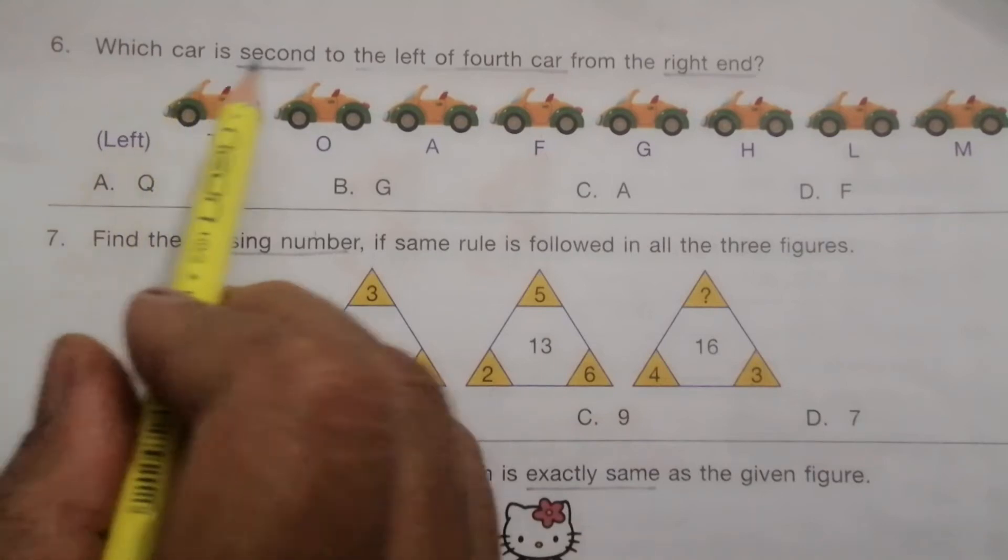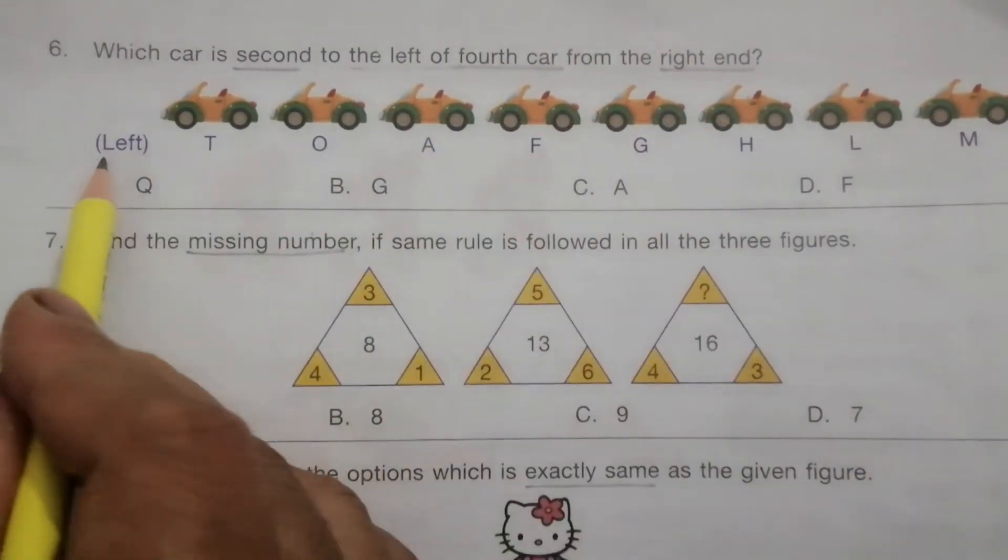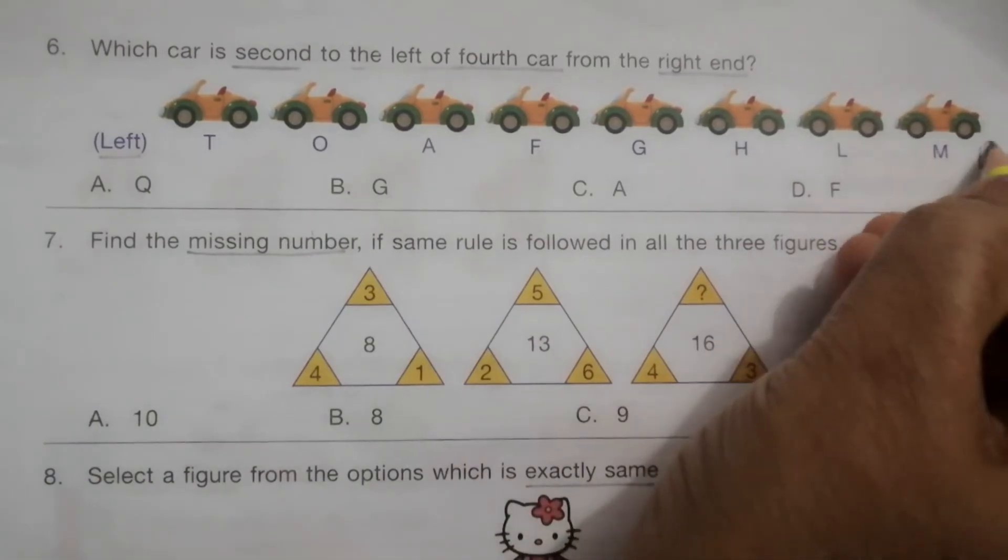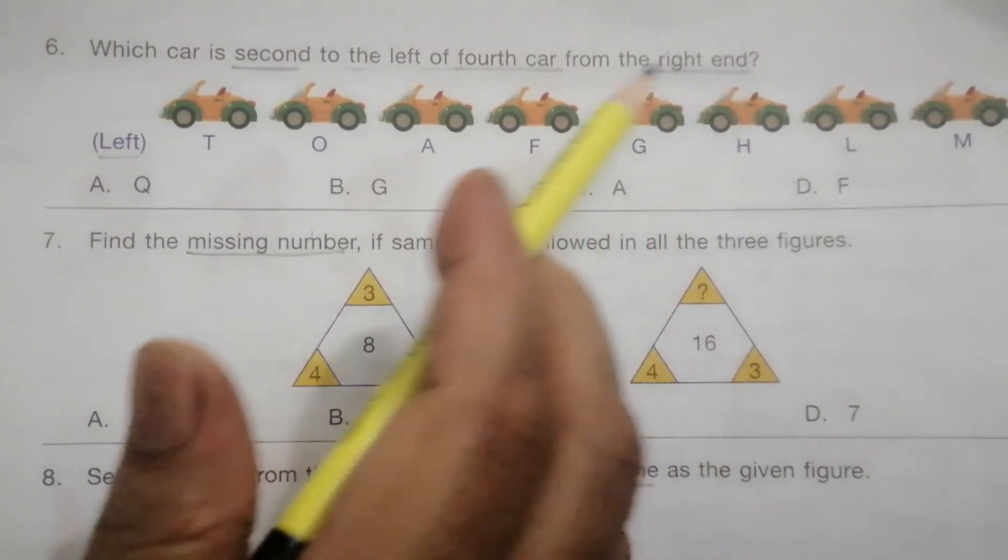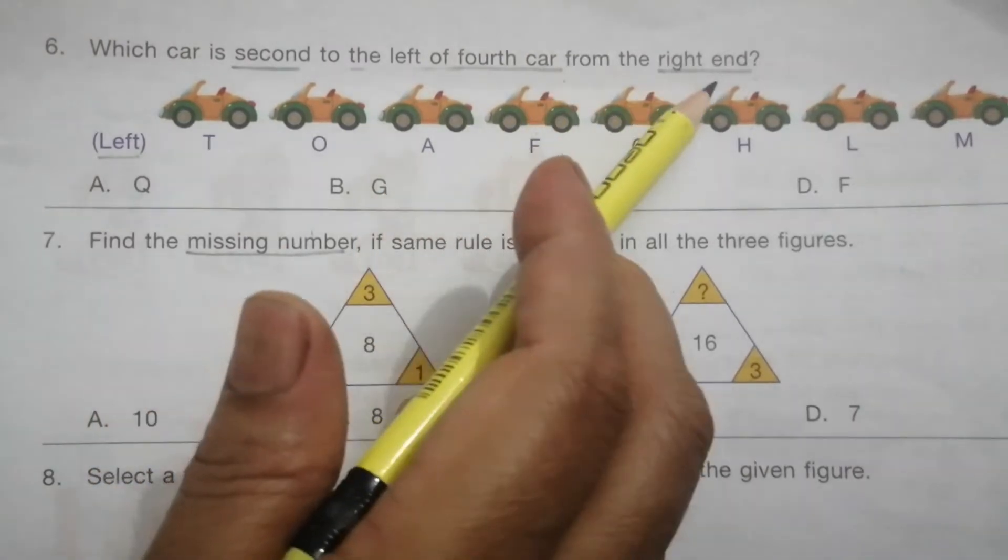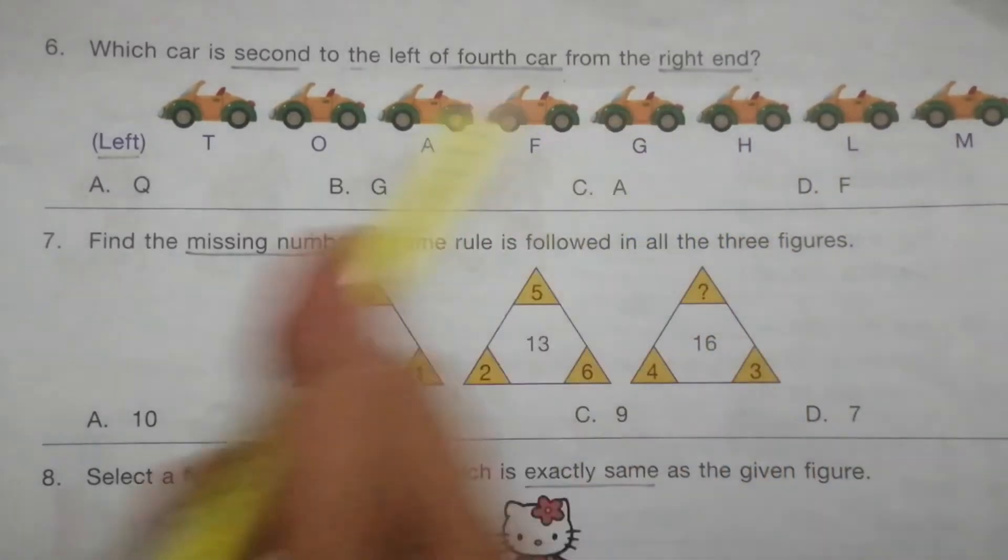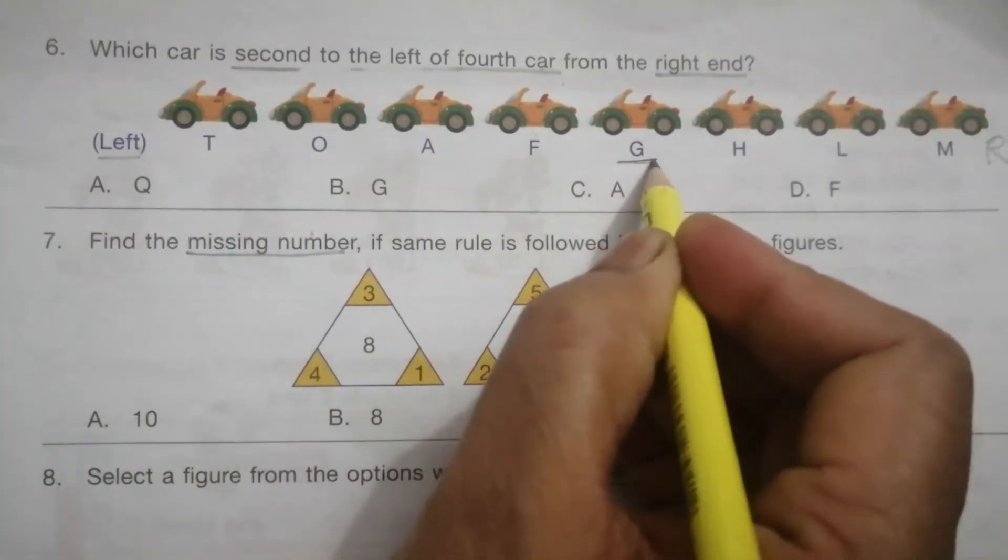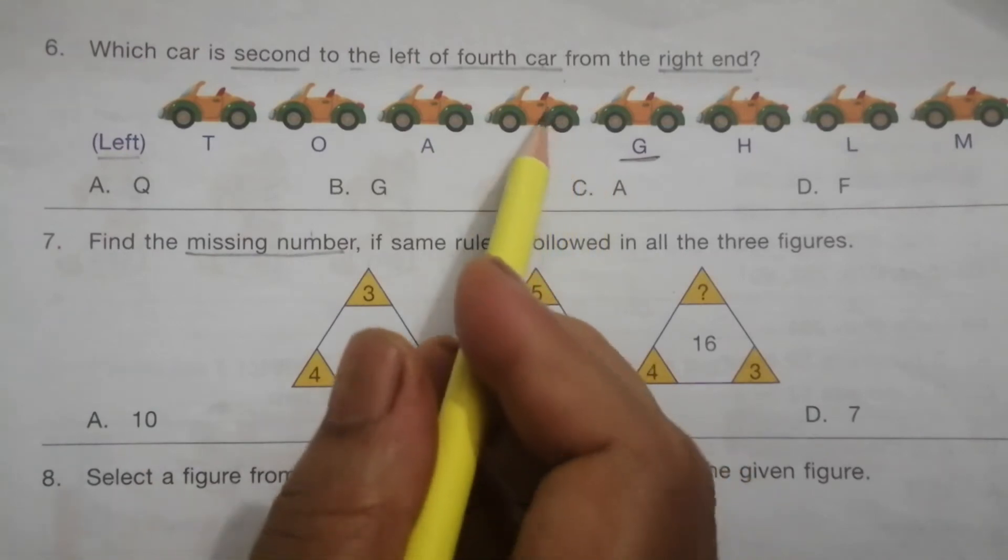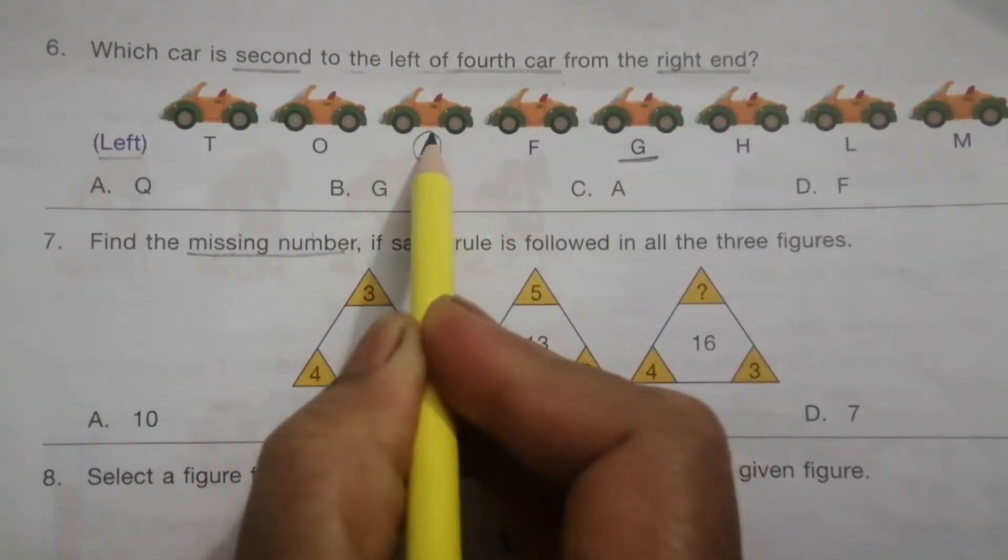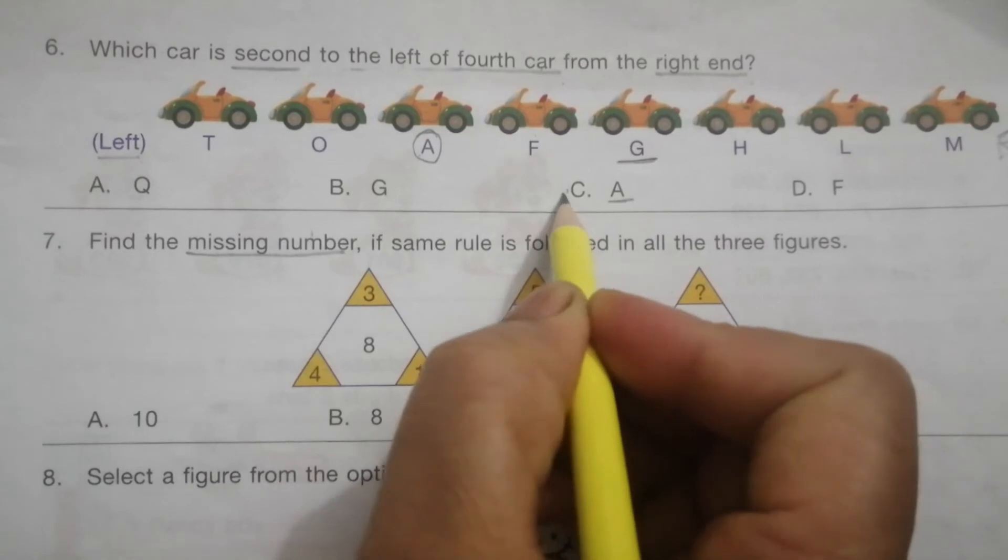Problem 6: Which car is second to the left of fourth car from the right end? Here this is left side, this is right side. For this type of problem we answer from the right side. Fourth car from the right end: 1, 2, 3, 4. So G is the fourth car. Second to the left: 1, 2. So this is second to the left. The answer is A, which is C on the answer sheet.